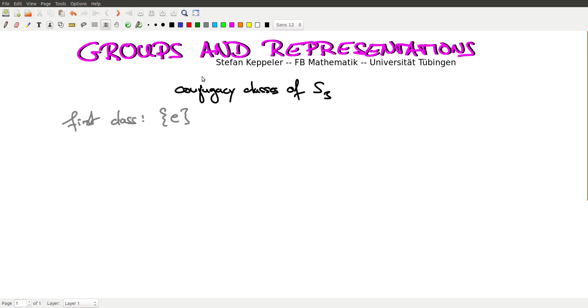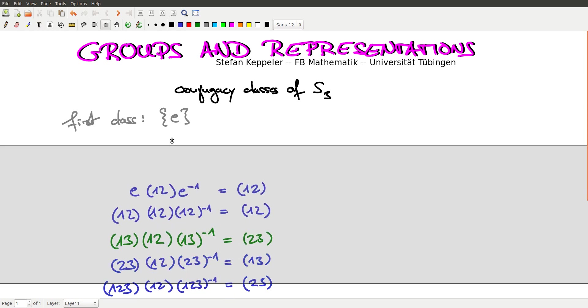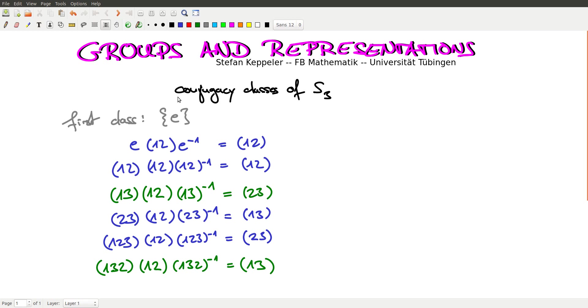Then we take one element and conjugate it with all the other elements. So I've done this for you here with (1,2). The green lines we already calculated in the last video. If you conjugate (1,2) with any other element of S3 you always get either (1,2), (1,3), or (2,3). So these are a conjugacy class. If you go on now and conjugate (1,3) and (2,3) with all the elements, then again you end up with just these here. So the second class which we find consists of these two-cycles.